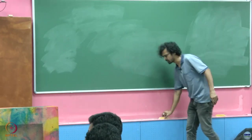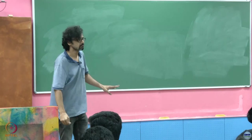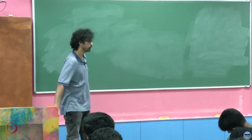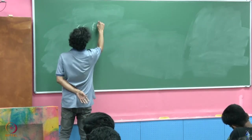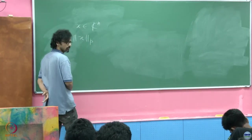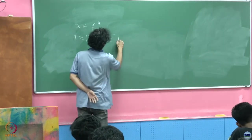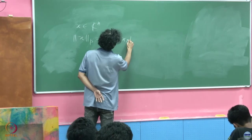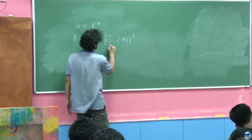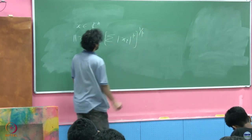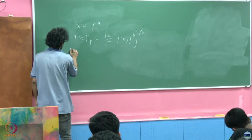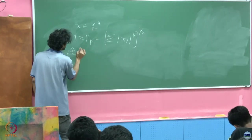Let me talk about norms of vectors and matrices — these need not be norms induced by inner products, but general norms. For a vector, the p-th norm is given by the sum of the absolute values (moduli) of the individual components raised to the power p, then the p-th root thereof. Interestingly, as p tends to infinity, what does this norm turn out to be?